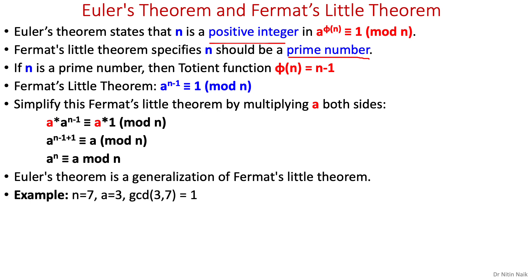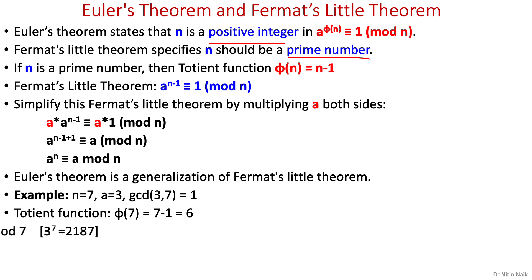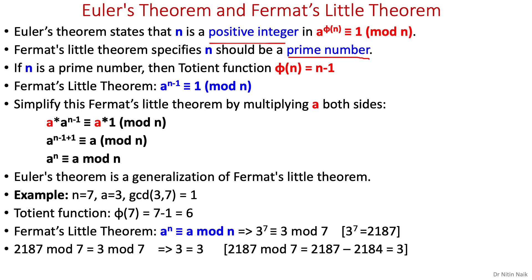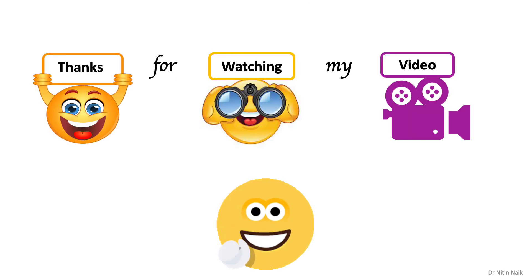Let's look at an example: n equals 7, a equals 3, GCD is 1. The Totient function is 6. Applying the simplified Fermat's Little theorem and solving the relation, we get 3 equals 3, which is correct — this proves the theorem. This concludes the presentation. Thanks for watching.